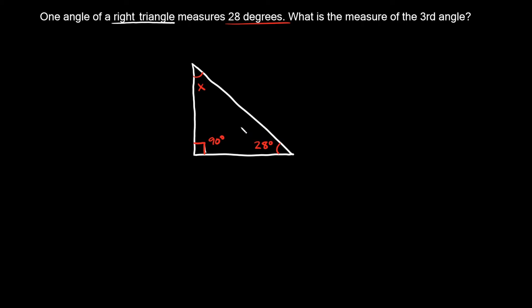Again, the process is the same. When you add these three angles up, it should add up to 180 degrees. So if we did 90 degrees plus 28 degrees plus x, these should all add up to 180 degrees.